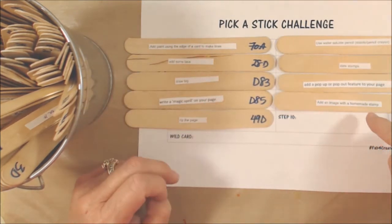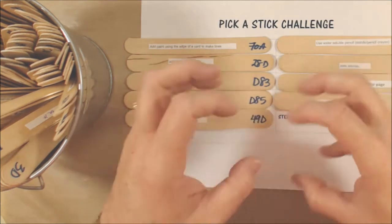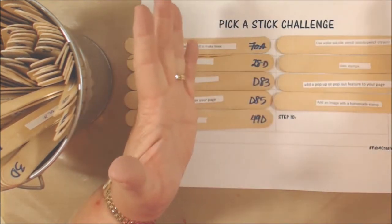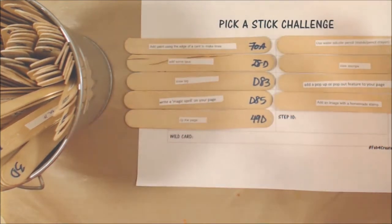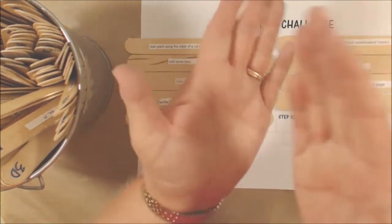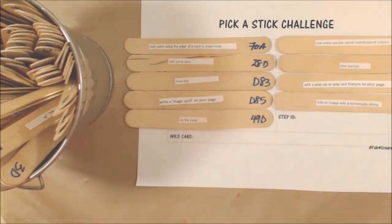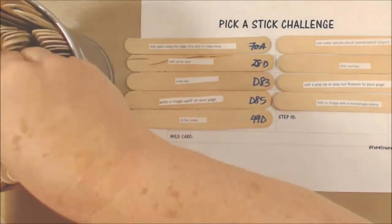Last month you guys did one where you attached string to some cardboard and made a stamp with that. Anything like that—carve an apple, carve a potato, cut off the end of a celery. That makes a neat rose stamp, anything like that.